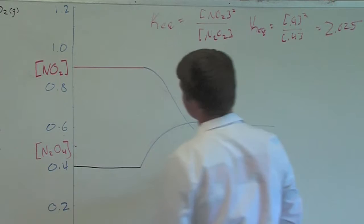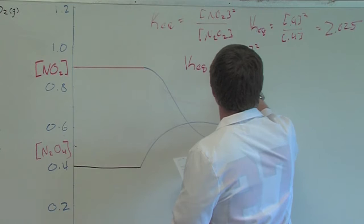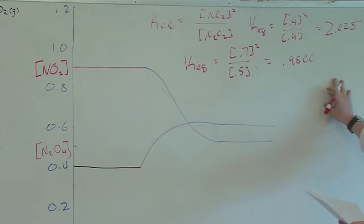So the new KEQ for the first graph, since it ends at 0.7 and 0.5 for our concentrations, would be 0.7 squared over 0.5, which is going to equal 0.9800. And as you can see, the KEQ has decreased from the original.